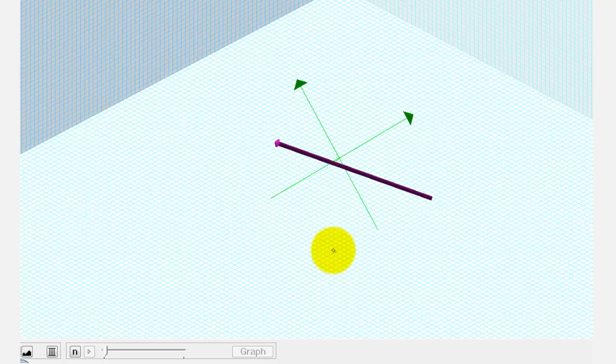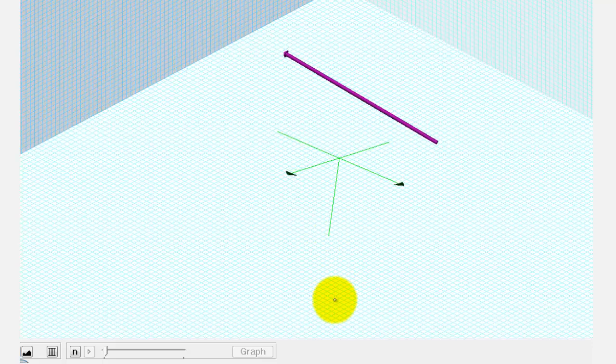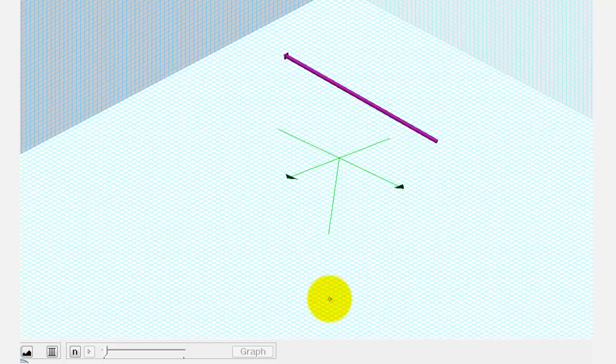We're going to find this vector in component form which would give us the same vector but the initial point would be at the origin rather than at point A.